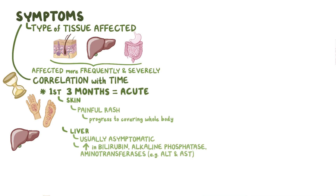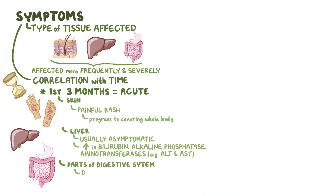Acute graft-versus-host disease can also involve other parts of the digestive system, particularly the distal small intestine and colon, causing diarrhea, intestinal bleeding, and abdominal pain.